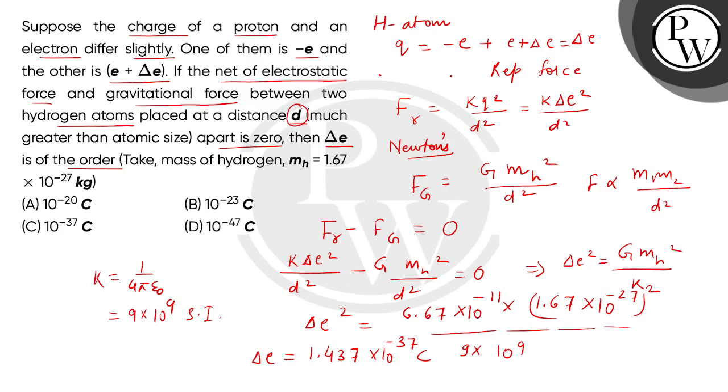Now, in the question we can see we need to find the order. So the order is 10 to the power minus 37. So the correct answer is option number C. Thank you.